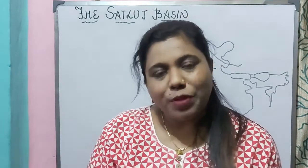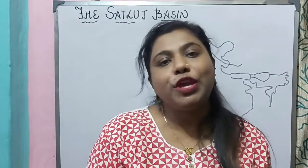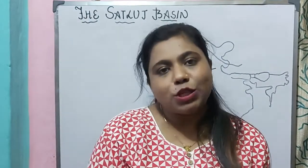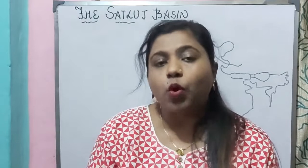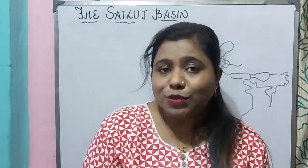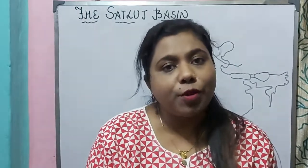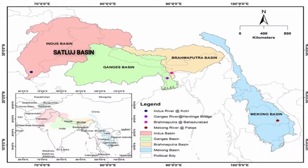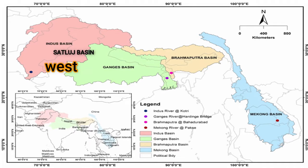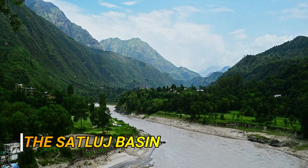Hello, my dear students of Class 4. How are you all doing? Welcome back to my geography classes. In the last video, we discussed the location and extent of the northern plains, how the northern plains were formed, what alluvium is, what a tributary is, and what a river basin means. I told you that the northern plains are divided into three river basins: the Satluj basin in the west, the Ganga basin in the middle, and the Brahmaputra basin in the east. Today we will discuss the Satluj basin.